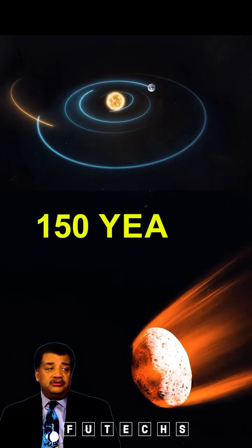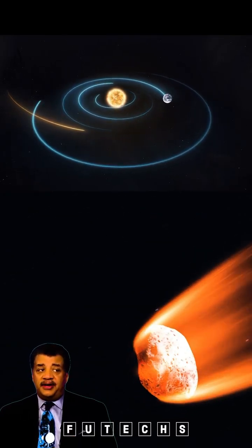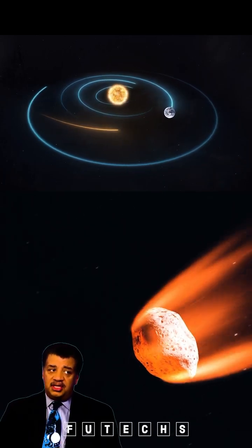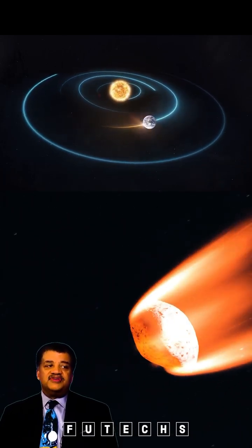If we discover an asteroid that might hit us in 150 years, plenty of time to do something about it, given the rate of technology and the ingenuity that we have in the species. How do you stop a gigantic existential asteroid?